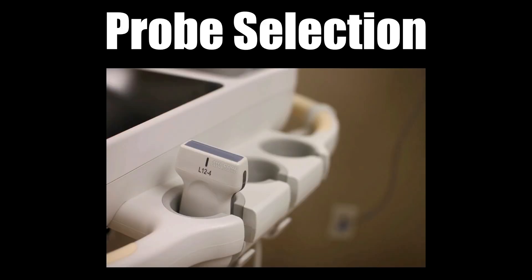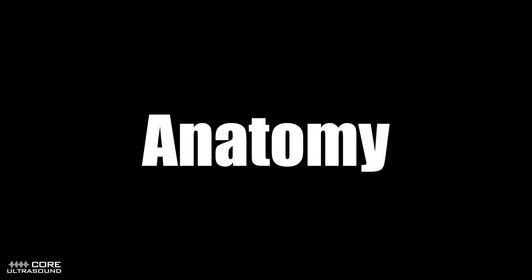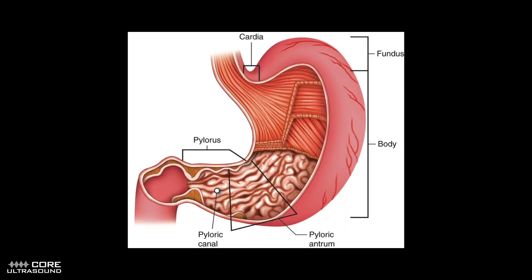For probe selection, we're going to be using a high-frequency linear probe. Now let's change gears for a second and think about anatomy. We're going to be focusing our evaluation on the stomach as it enters into the intestines at the muscular junction called the pylorus.